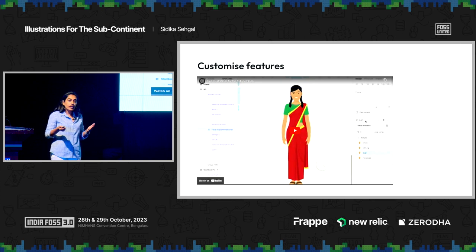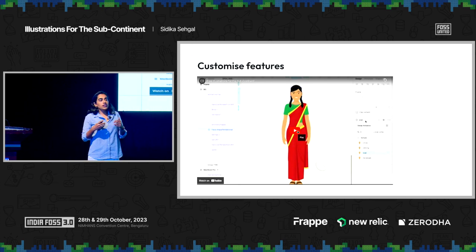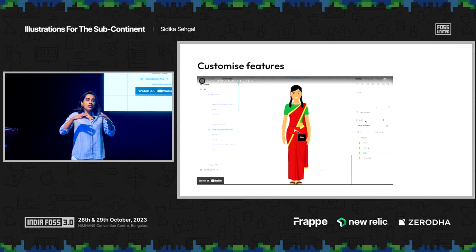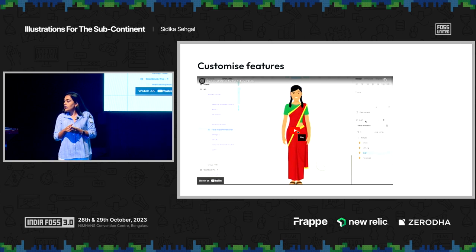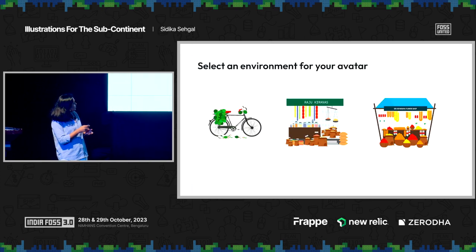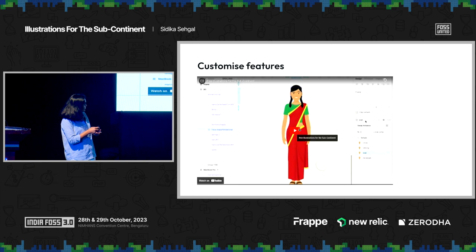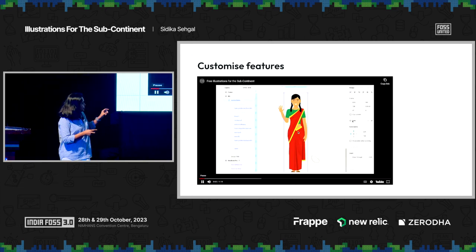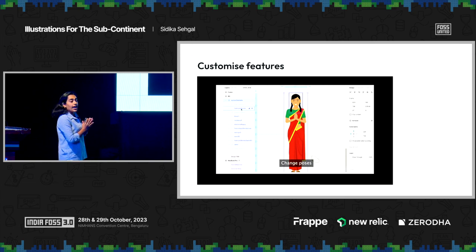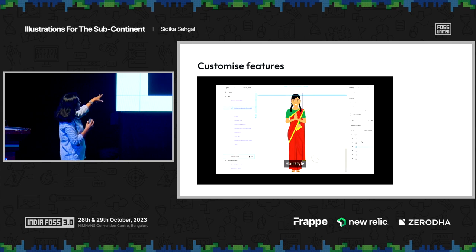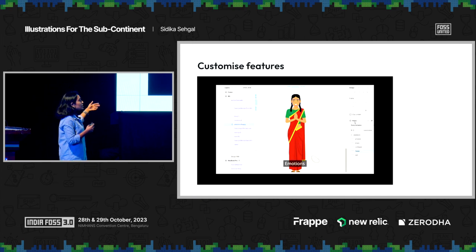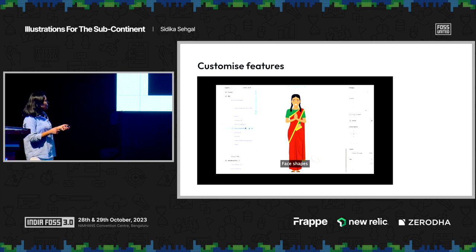Once we created avatars, we wanted them to be plug and play. We took inspiration from Pablo Stanley, who is another famous illustrator. What he essentially did was build on top of Figma's components, which allows you to scroll down on the sidebar and swap elements without changing everything. You can change how her hands are, change the hairstyle, change expressions, change clothes and accessories — pretty much everything. You can make her look amazed, angry, confused, sad. We built this into Subcontinental.